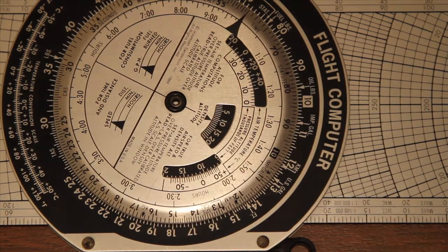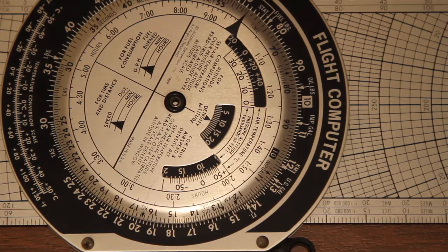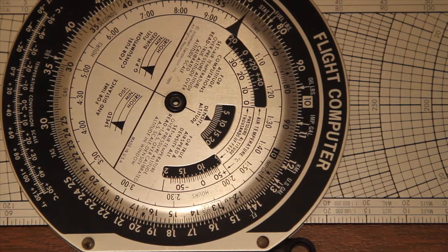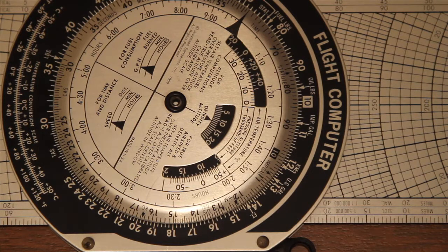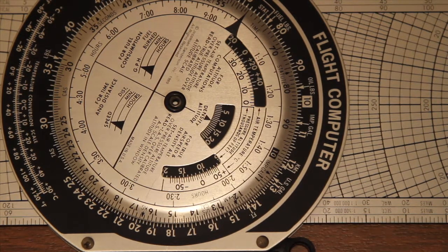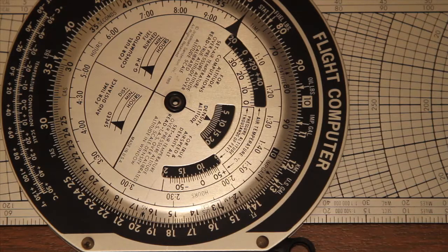G'day and welcome to another episode of AusNavigation. Tonight I'm going to show you another trick that you can use with the E6B flight computer, and that is that you can do multiplication and division using the circular slide rule. So here we go.